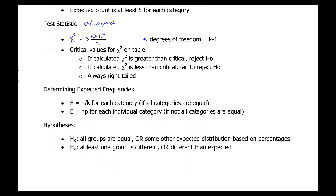The expected value E is something you can calculate two different ways. You can do n divided by k if you think that all the categories should be equal. Or you can do n times p if you have a proportion or percentage that you expect for each category — and in that case, they wouldn't all be equal.